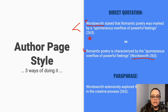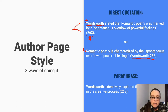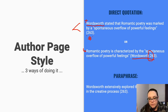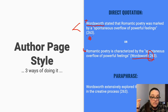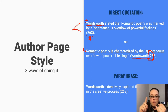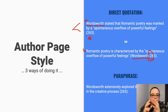The same exact information as the quotation above, just presented in a different way — you can do either of these, this is totally fine. Notice in the second one there's no punctuation between the two: it's not 'Wordsworth, 263' or 'Wordsworth p. 263' — it's just author, page number. That's the format.